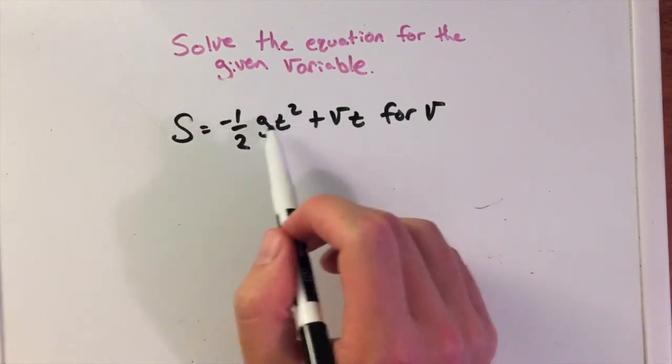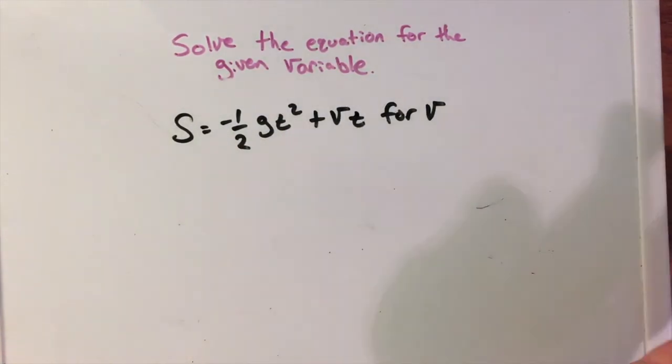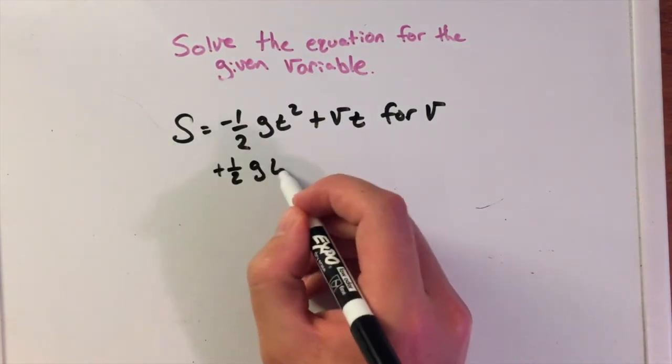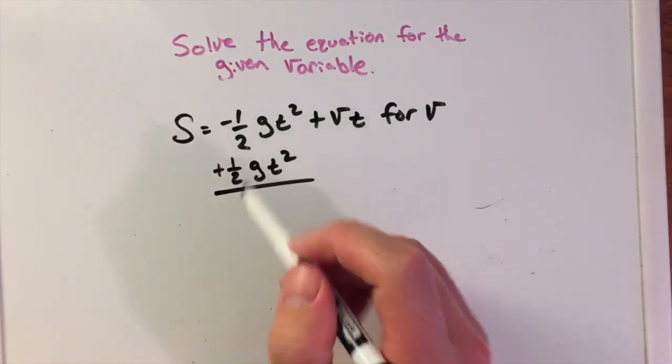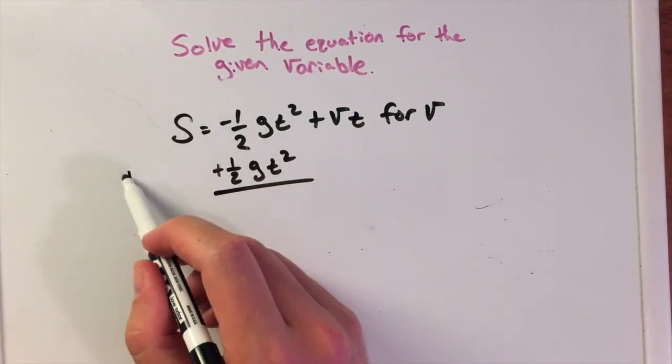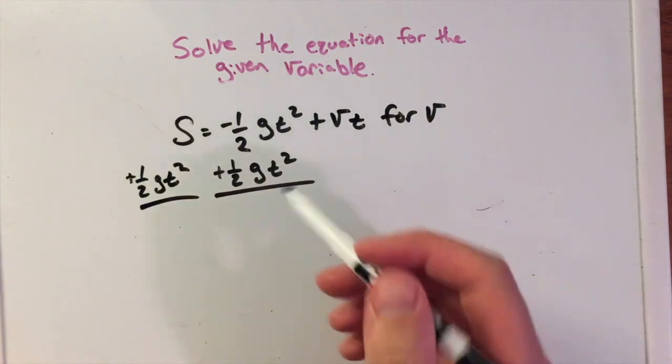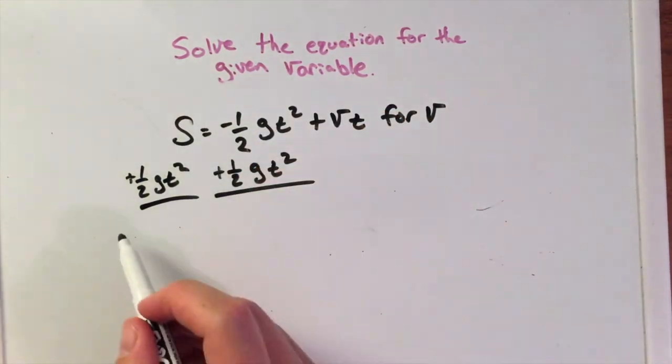I'm going to take this section here, and since there's a negative there, let's add this whole thing: plus one-half g t squared. I'm going to add that to both sides.